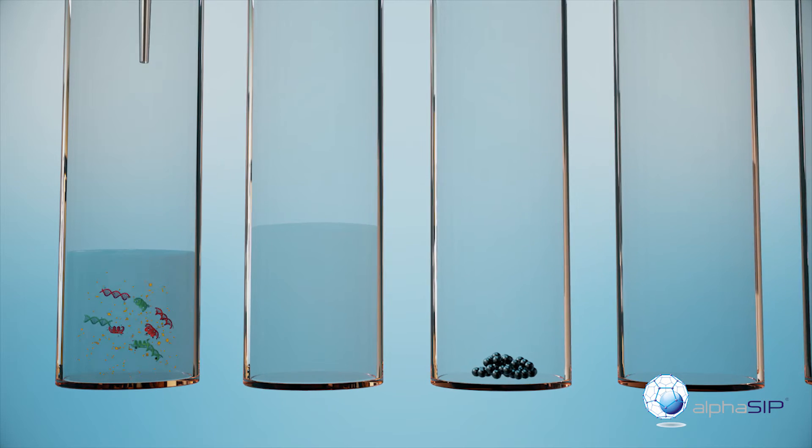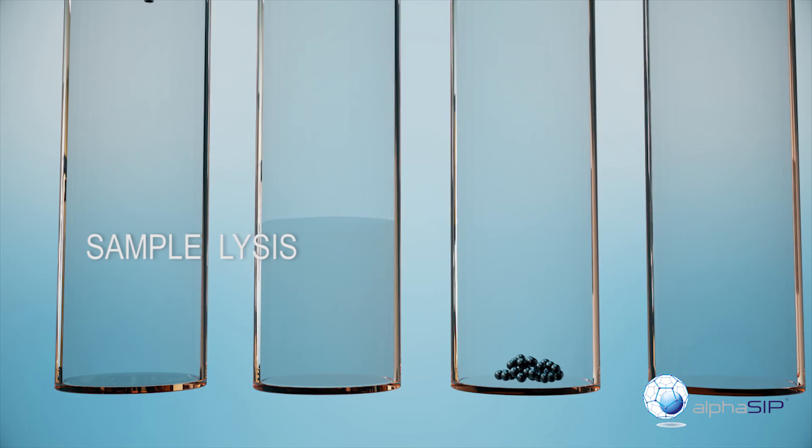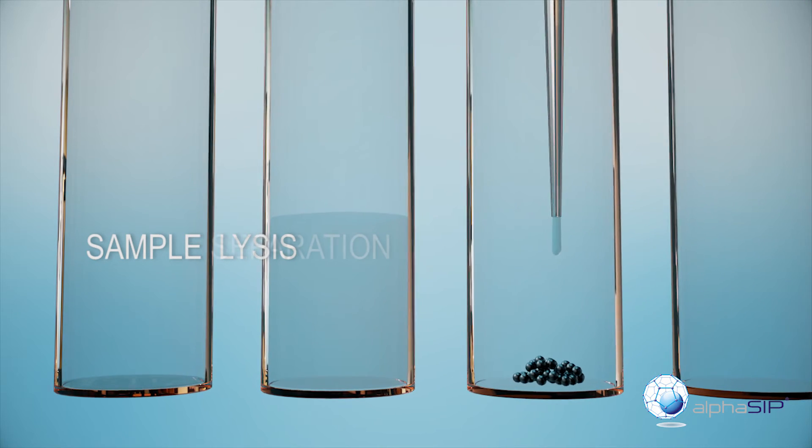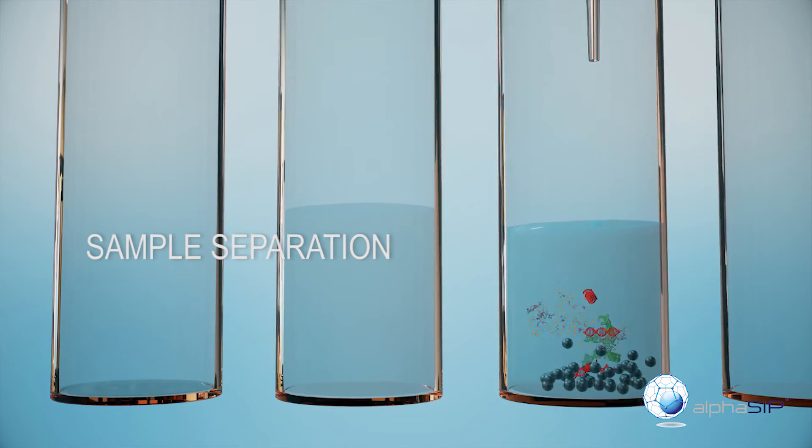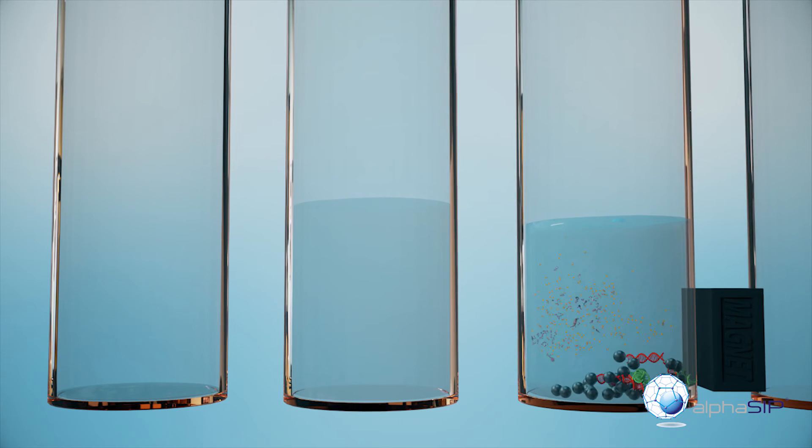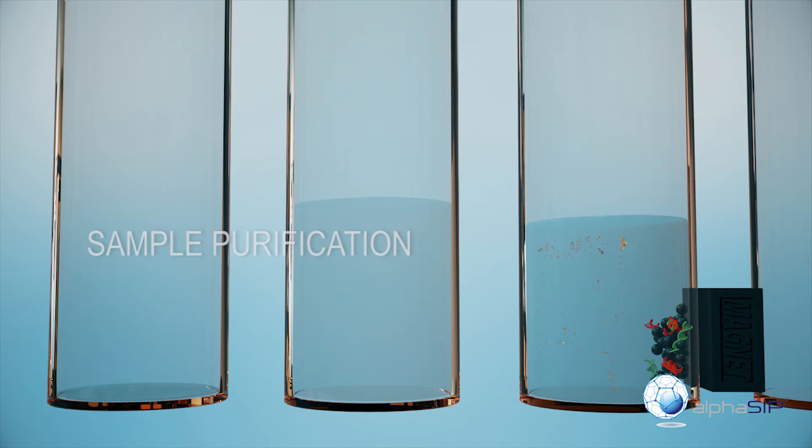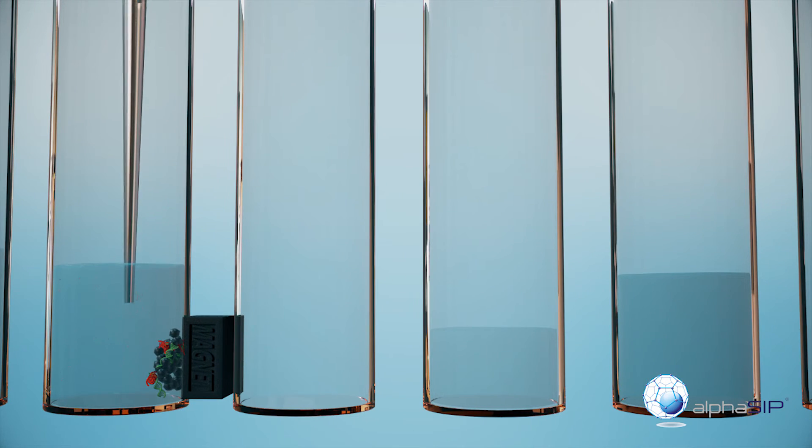Once the cartridge is inside Pneumosip, the platform will automatically perform the cell lysis. A fraction of the lysate is transferred to another well where the DNA purification will be done with magnetic beads. Now we can remove all the supernatant to keep only the purified DNA. DNA will be finally detached from the magnetic beads using an elusion buffer.